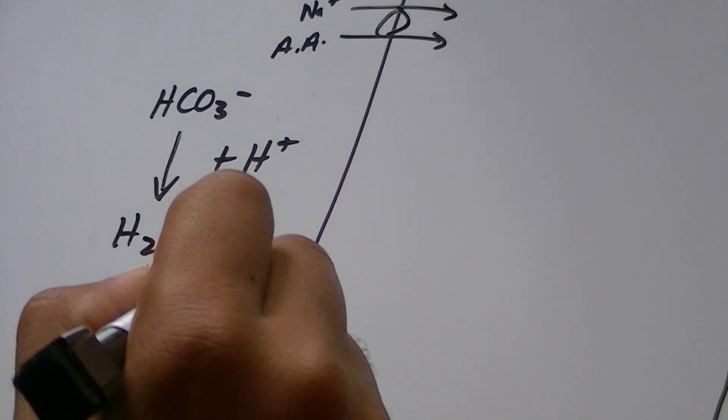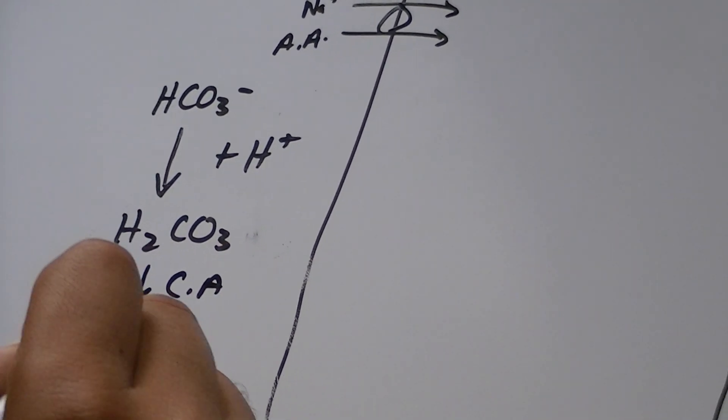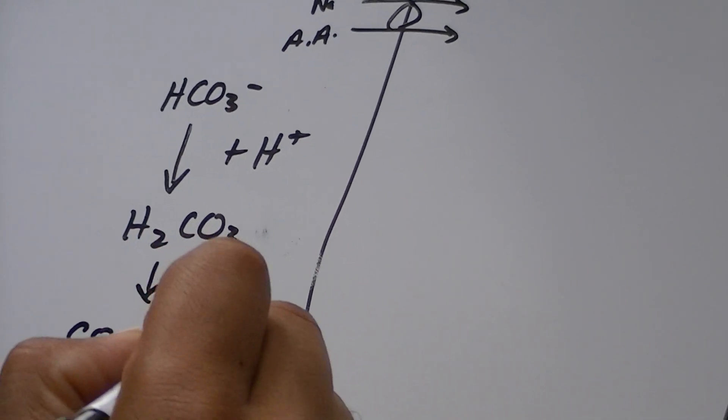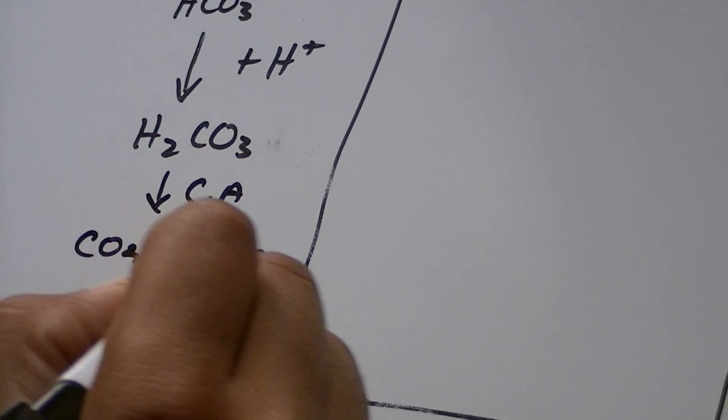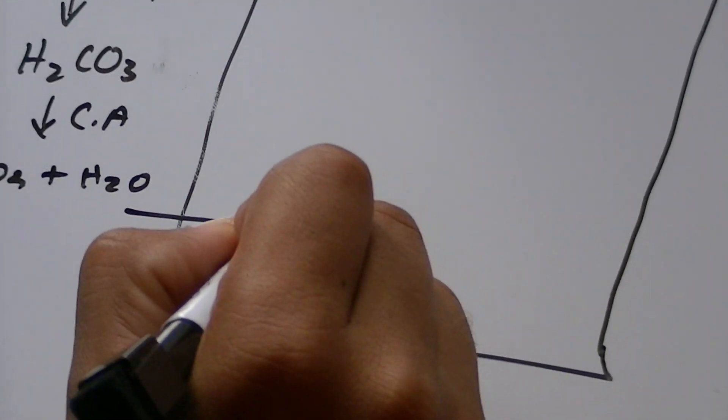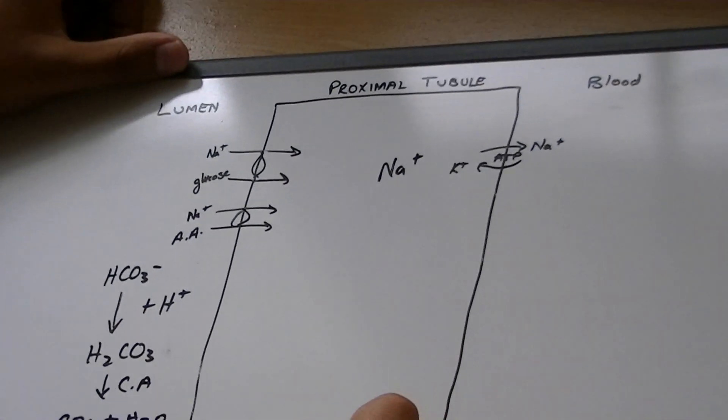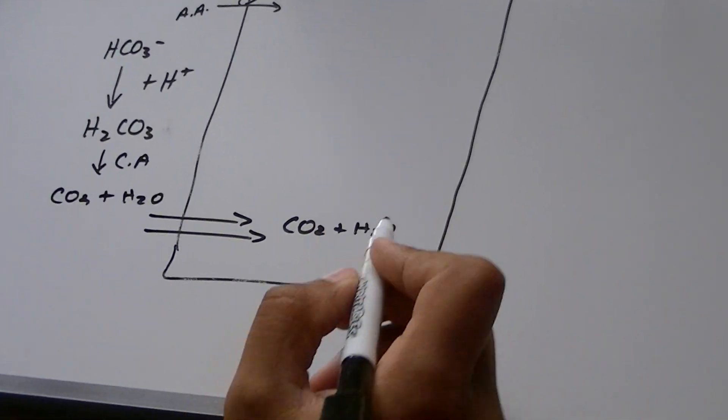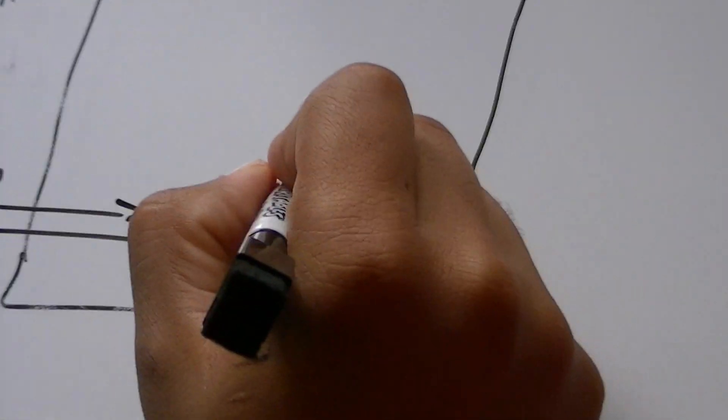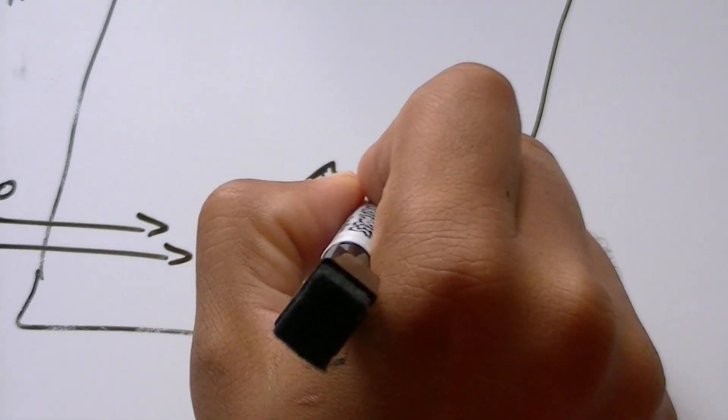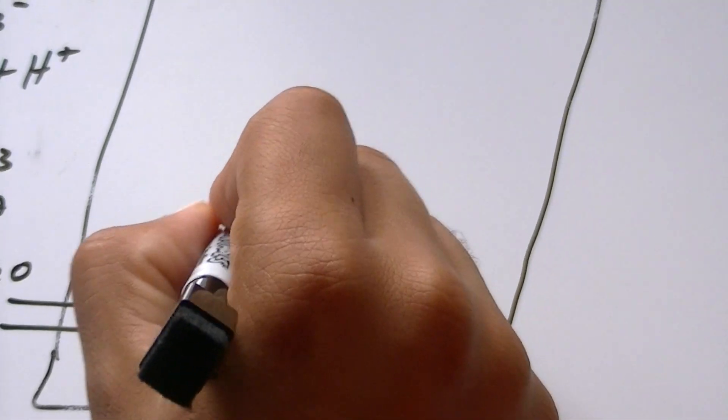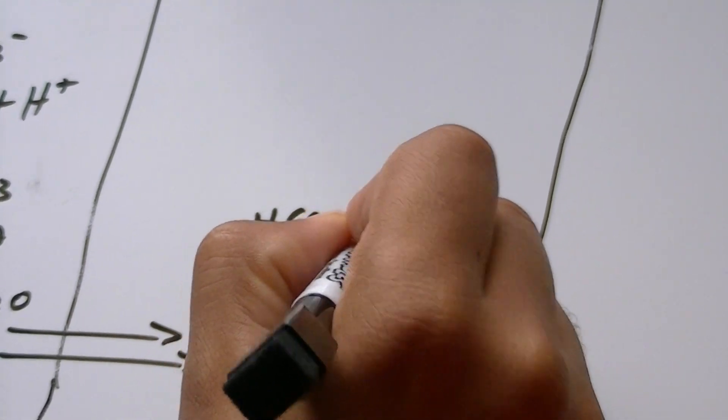Carbonic anhydrase is an enzyme that breaks this down into carbon dioxide and water, which diffuses into the cell, and comes into the cell as carbon dioxide and water, where there's another carbonic anhydrase, which converts this into bicarbonate and hydrogen.